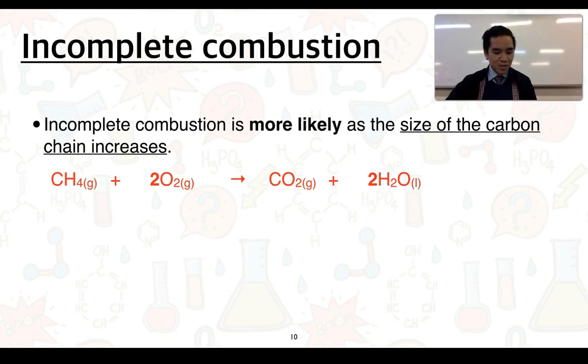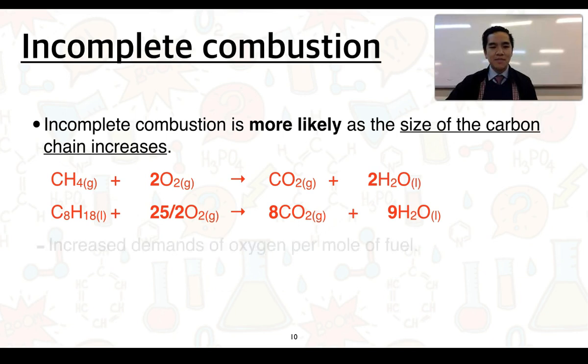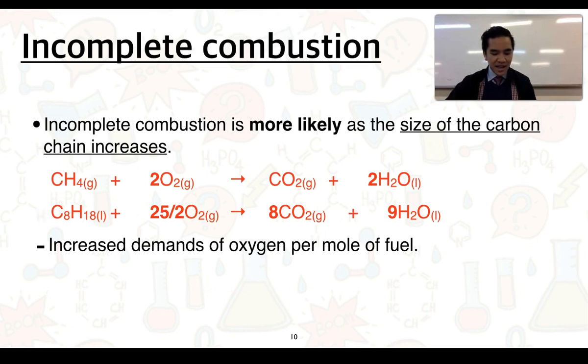Coming back to our methane example undergoing complete combustion to form CO2 and H2O, we'll contrast that with octane undergoing complete combustion. We can see between the two, octane is the larger molecule or has the larger carbon chain, and there is essentially increased demands of oxygen per mole of our fuel, going from methane which only requires 2 moles of oxygen per 1 mole of methane, whereas for octane, for 1 mole you would need 25 on 2 moles of oxygen to undergo complete combustion.